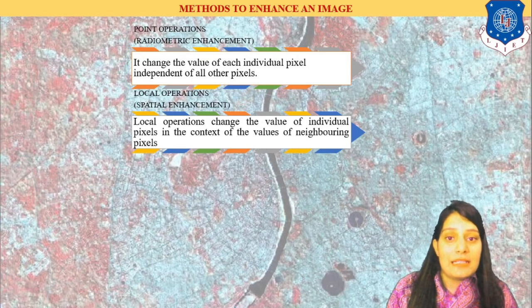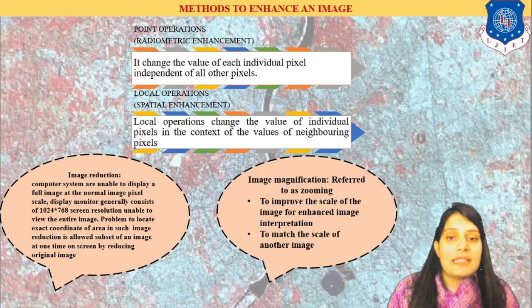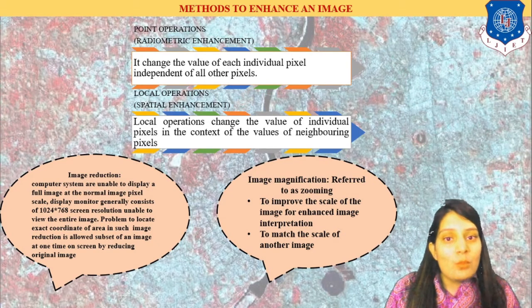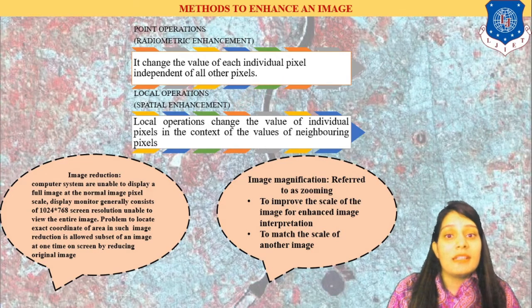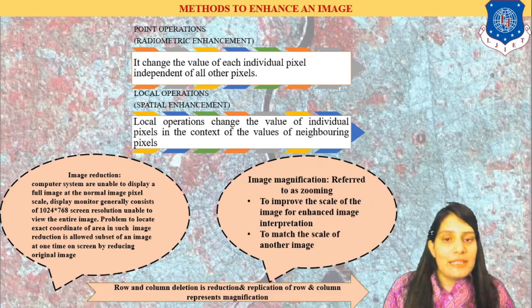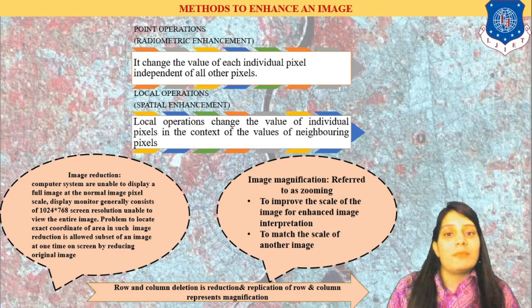We are playing with the intensities and histograms of the image, which indicates color, brightness, what is required and what is not. There are two types: image reduction and image magnification. Image reduction means deleting rows and columns — that is pixel values — from the image. Image magnification means zooming the image, doubling the pixel values. In simple terms, deleting rows and columns is image reduction, and adding or doubling rows and columns means image magnification.